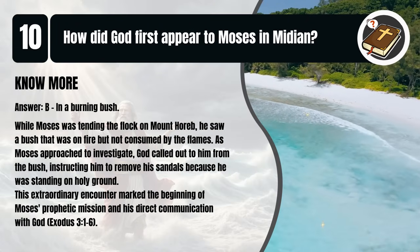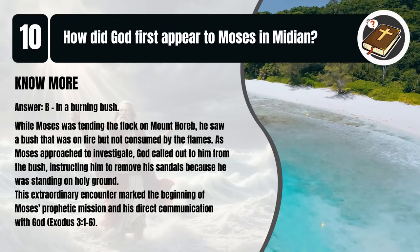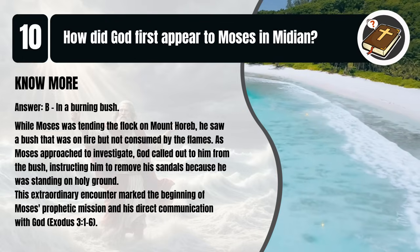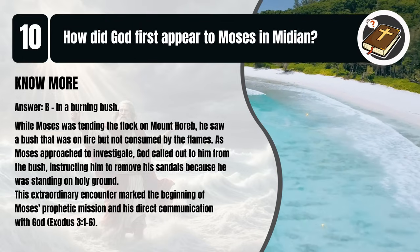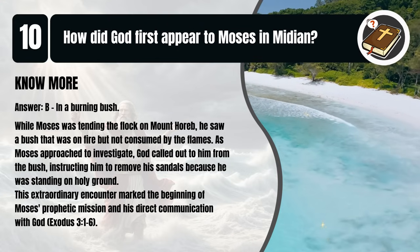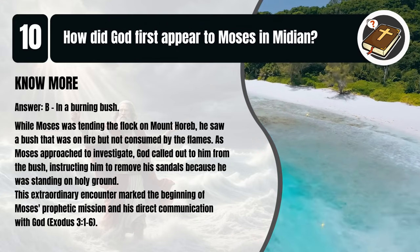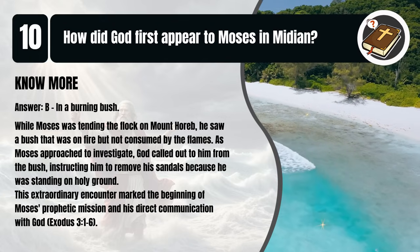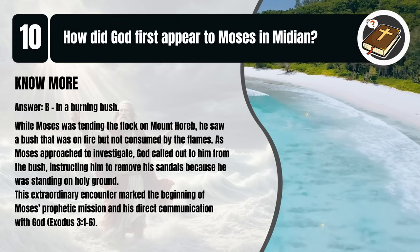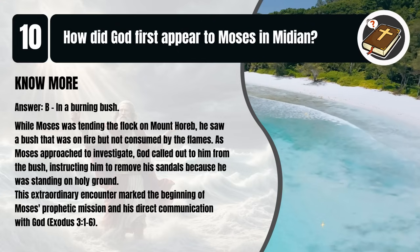That's B. In a burning bush. While Moses was tending the flock on Mount Horeb, he saw a bush that was on fire but not consumed by the flames. As Moses approached to investigate, God called out to him from the bush, instructing him to remove his sandals because he was standing on holy ground. This extraordinary encounter marked the beginning of Moses' prophetic mission and his direct communication with God. Exodus 3:1-6.